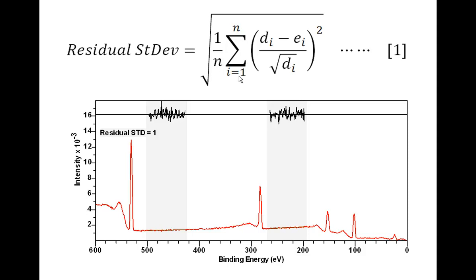When we take a ratio, each term should be close to unity. We then sum n of these and divide by n, so we ought to end up with a number very close to unity, and taking the square root of that will bring it even closer to unity.